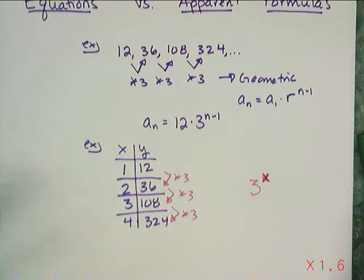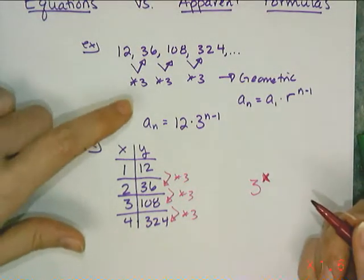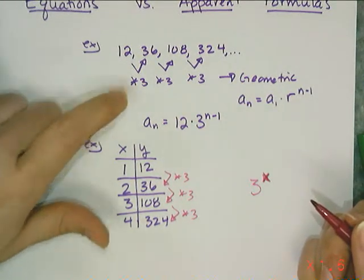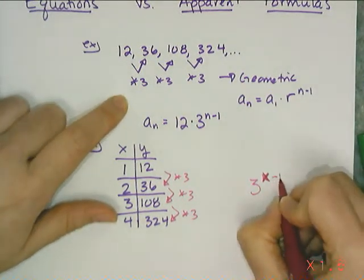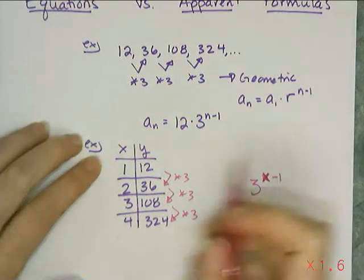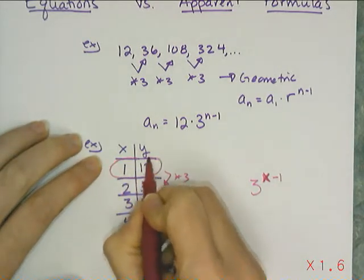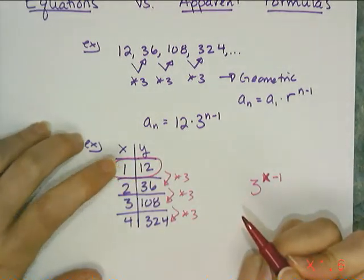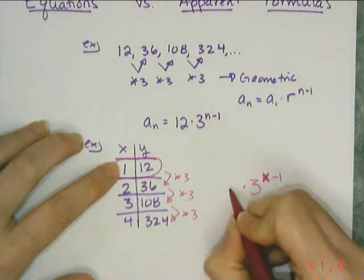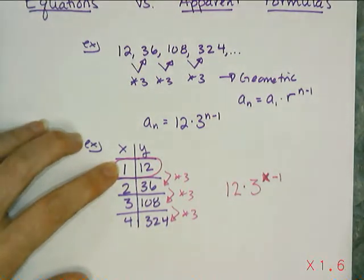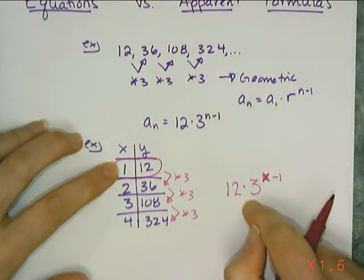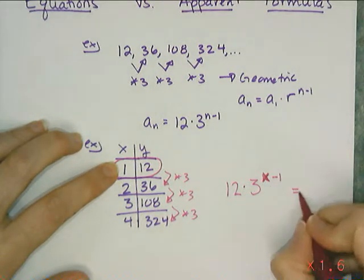Then I just have to do one of two things. I can actually treat this exactly like the apparent formula and say x minus 1 instead of n minus 1, and then find the y value that matches with x equals 1, and just multiply that by the ratio or the multiplier to the x minus 1 power and get y.